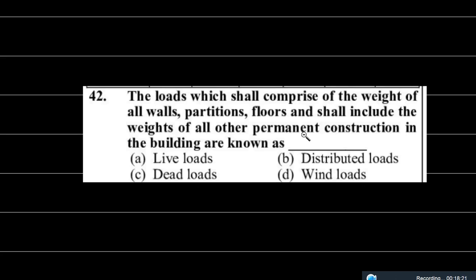The next question: the load which comprises the weight of all walls, partitions, and floors, including the weight of all other permanent construction in buildings — this is called dead load. It is a fixed load; it will not be variable. Walls, floors, and all permanent structures in a building are considered dead load. Live load means movable loads. So option C is correct: dead load.